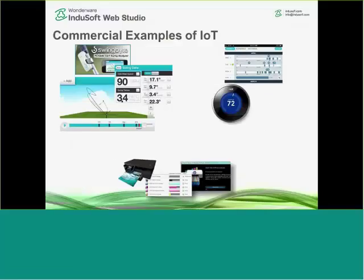Here are some commercial examples. On the right is the Nest thermostat — it sends information to your cloud account and analyzes it according to weather patterns to make your furnace or air conditioner more efficient. On the left is something called SwingBite, which I actually use. I'm a golfer, and this little motion sensor clips onto my club.